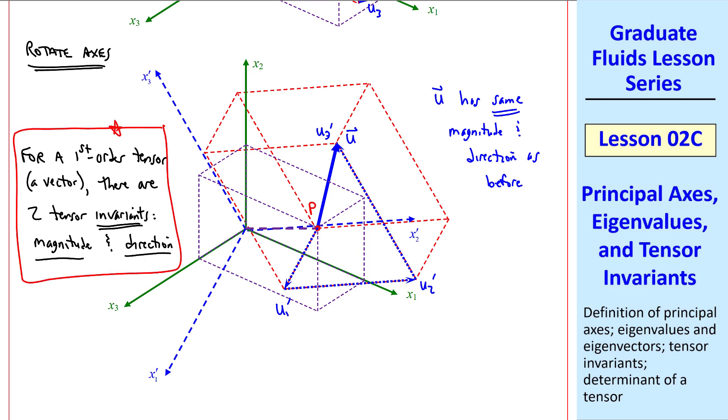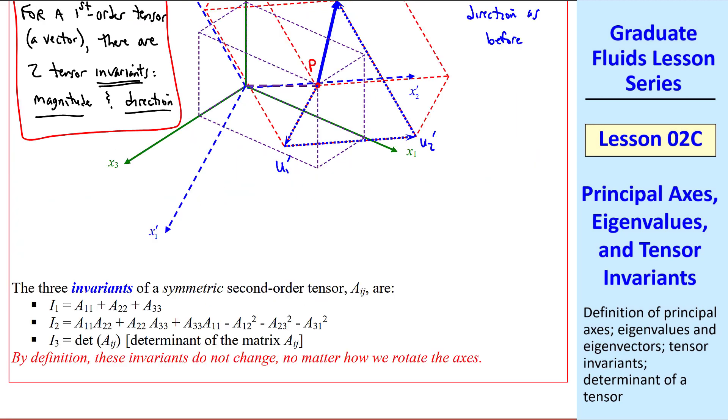Now let's extend this to second-order tensors. It turns out there are three invariants of a symmetric second-order tensor. I used AIJ here. I1 is the sum of the diagonals. I2 is given by this equation. And I3 is the determinant of this matrix AIJ. Just as we discussed for a first-order tensor, for a second-order tensor, we haven't changed any of the physics of the tensor by rotating the coordinates. So these are invariants. They do not change no matter how we rotate the axes.